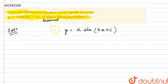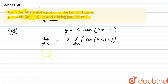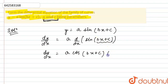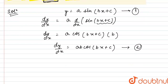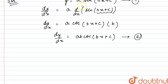Note that b is not a constant here. Differentiating with respect to x for the first time, we get dy/dx = a · d/dx of sin(bx + c). The differentiation of sin x is cos x, so we get cos(bx + c). Now using the chain rule, we differentiate bx + c: the differentiation of bx is b, and the differentiation of c is 0 since c is a constant. So we get dy/dx = ab·cos(bx + c). Let's call this equation 2, and the original equation 1.